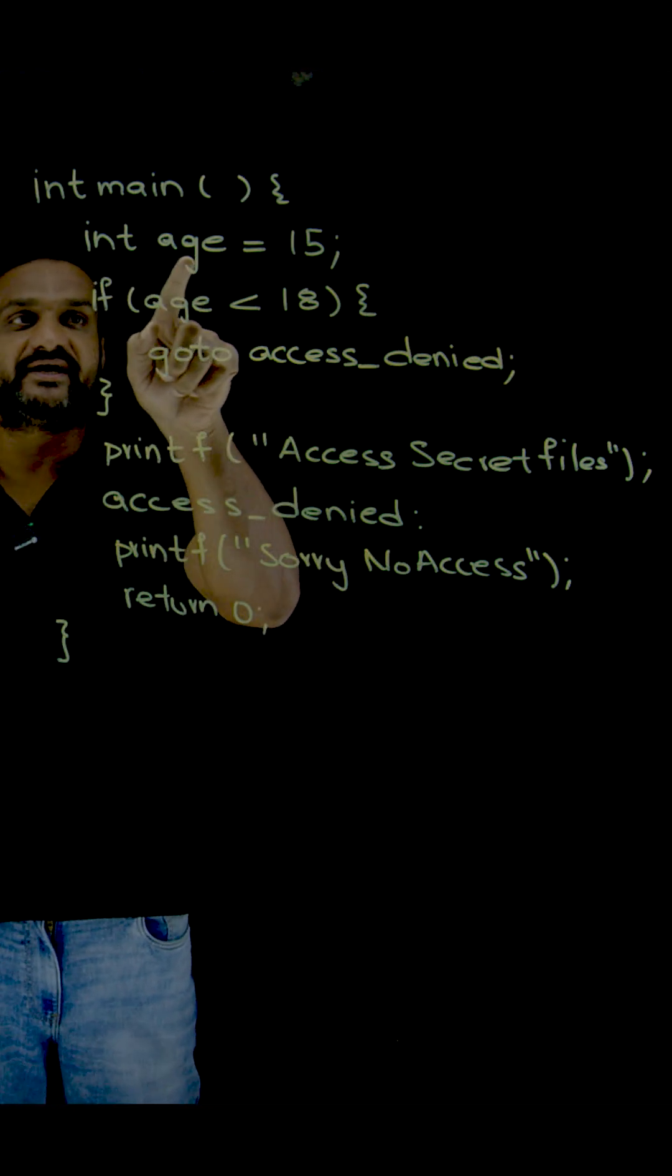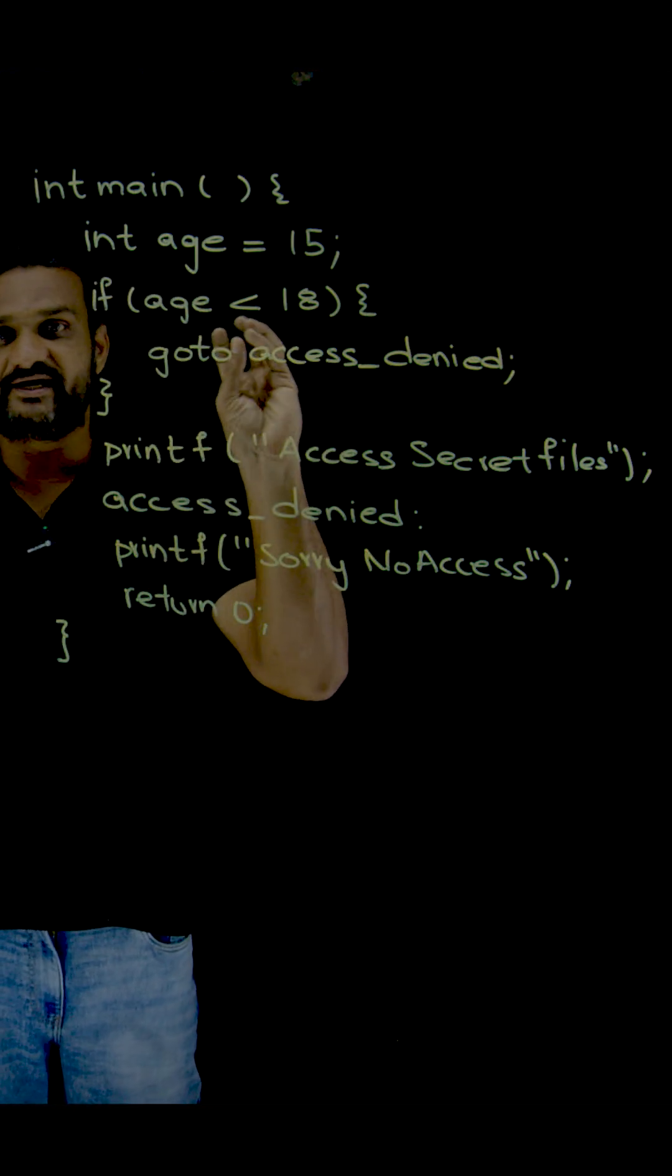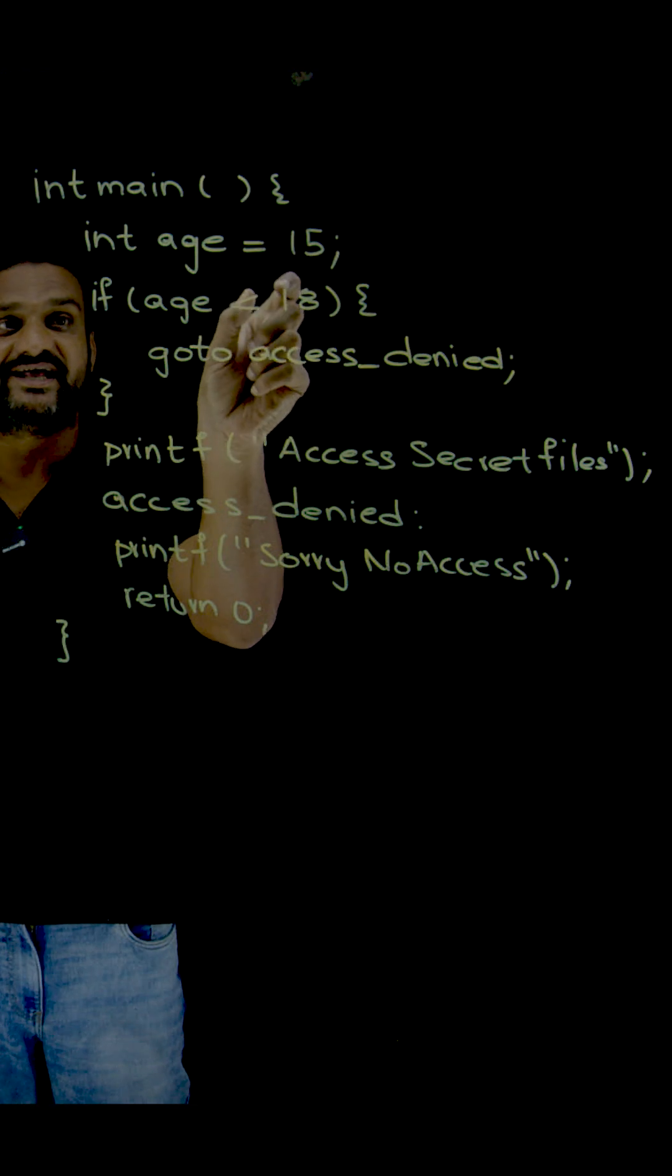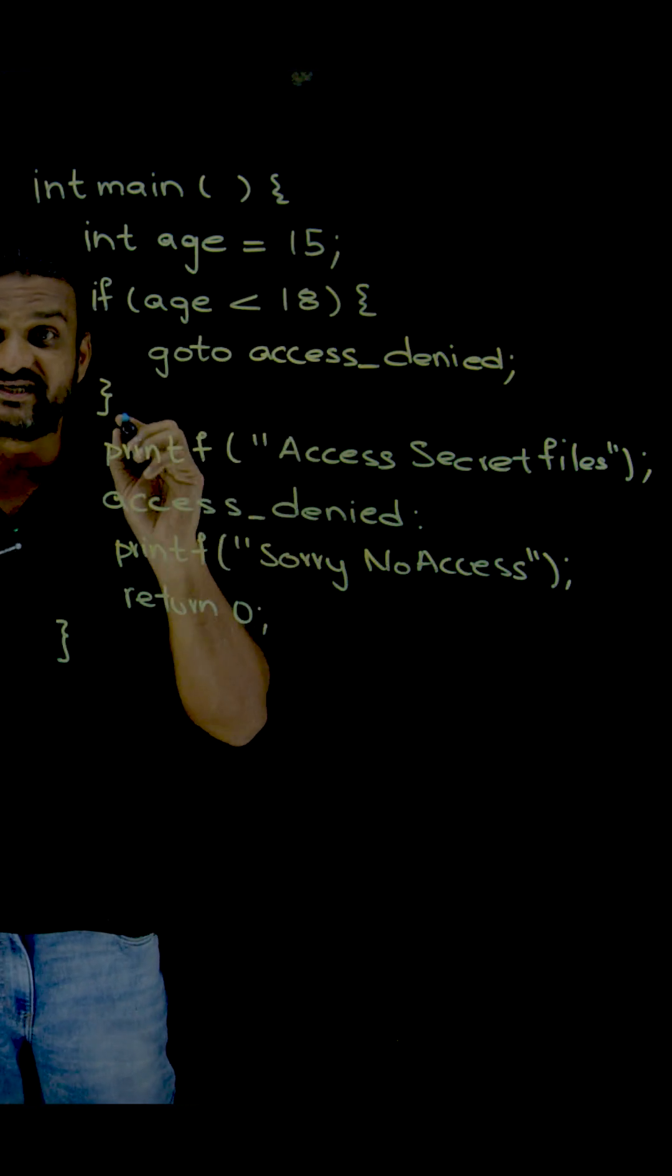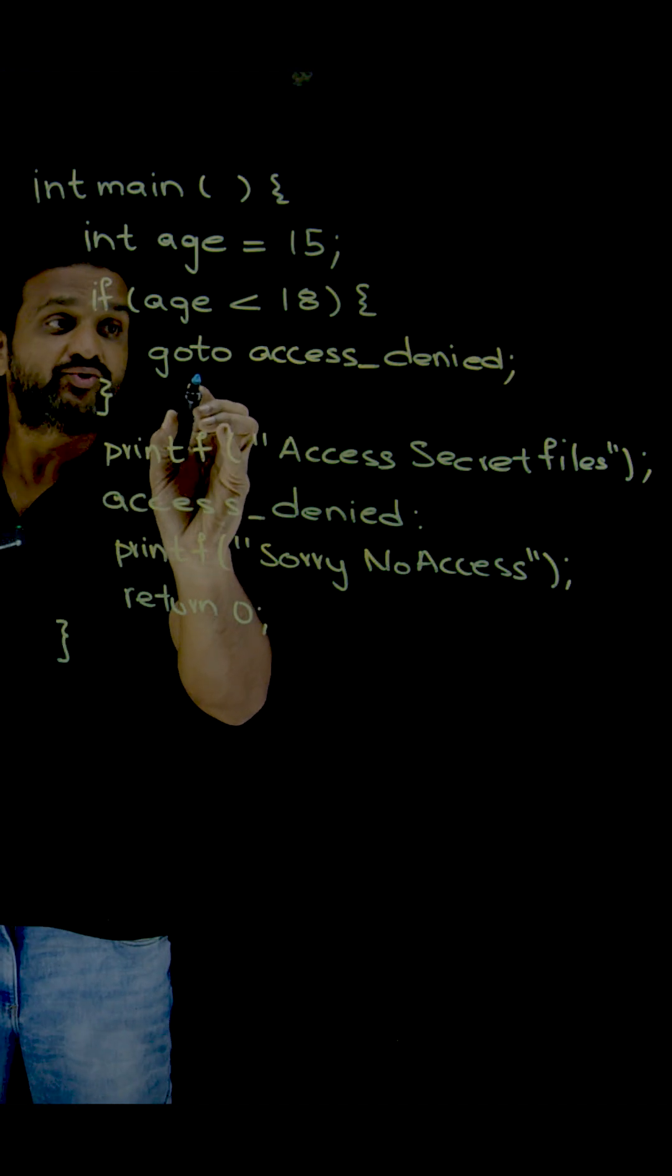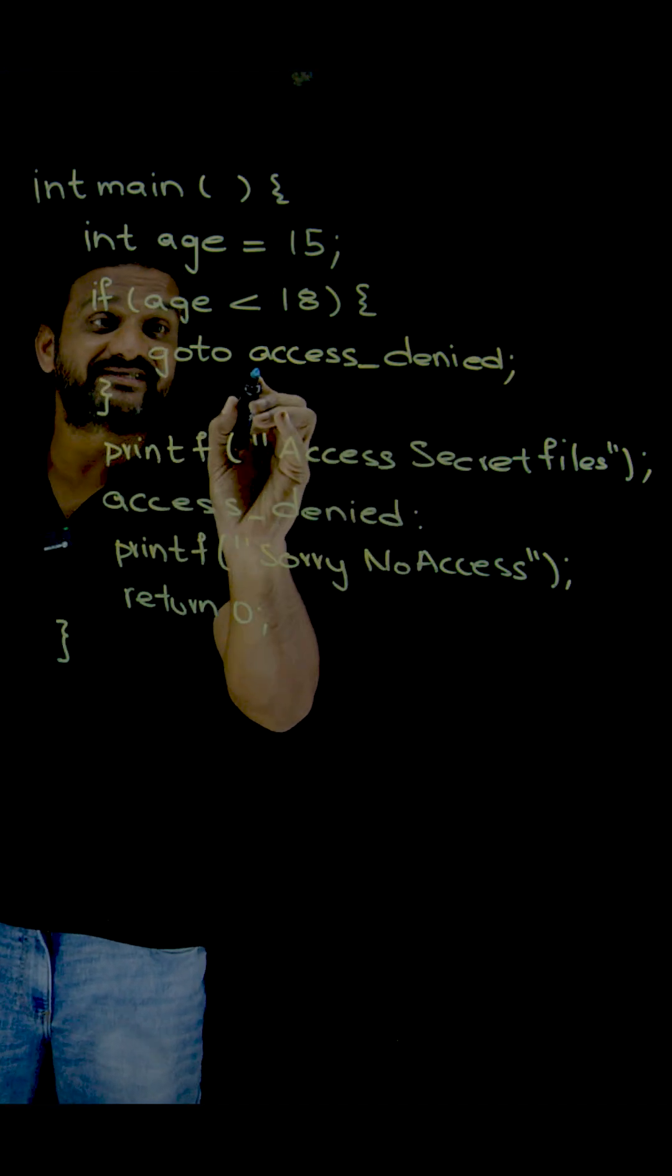Now here, age is a variable. int age equals 15, it is already initialized. If age is less than 18, go to access_denied. access_denied is the identifier.